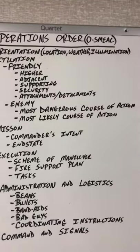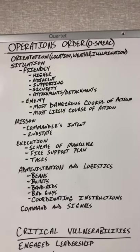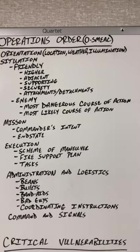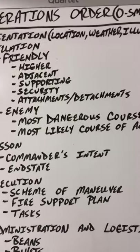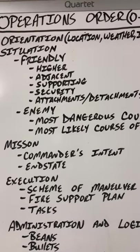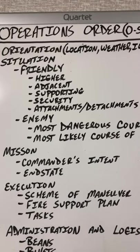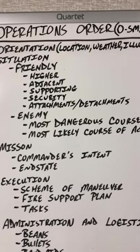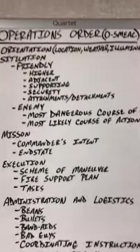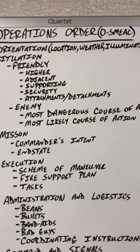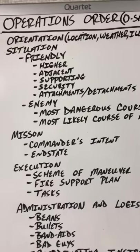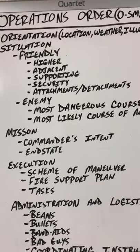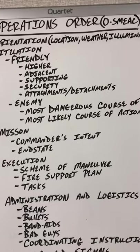In the operations order, the first thing you do is orient yourself to the area of operations. The Situation covers friendly and enemy. Friendly is your company — the higher element is the overall issues facing your company: what the business model is like, the tone and temper, and the climate within your company. Adjacent covers what issues are going on throughout the fleet — are there quality issues or safety issues trending that you need to be hyper-sensitive to in order to ensure first-time quality?